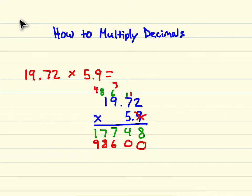Now we need to add our two partial products. 8 plus 0 is 8, 4 plus 0 is 4, 7 plus 6 is 13, carry your 1. 1 plus 7 is 8, plus 8 is 16, carry your 1. Then 1 plus 1 plus 9 is 11.